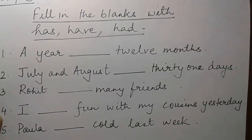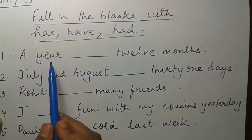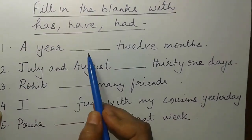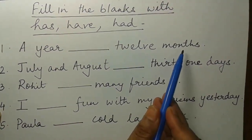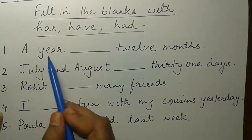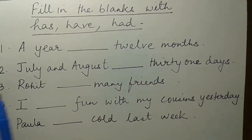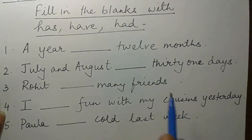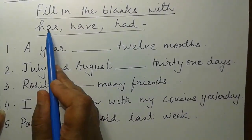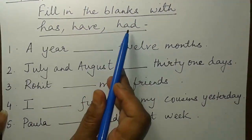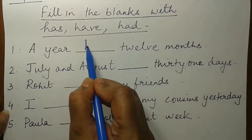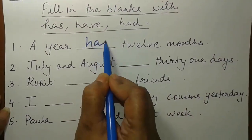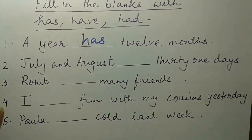Number one: a year ___ 12 months. A year means one year, so what will it be — has, have, or had? Has. Clear.